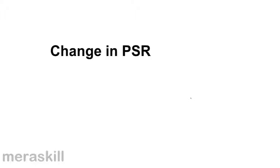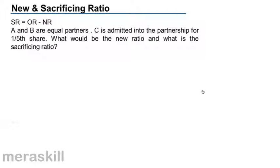First, let us understand the change in the profit sharing ratio, which has already been discussed in detail in the earlier module on partnership. A quick revision with the help of a couple of examples to understand what happens. SR is equal to OR minus NR — the sacrificing ratio is nothing but the old ratio minus the new ratio.